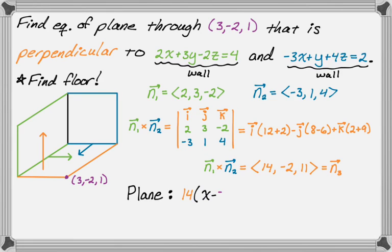So let's start substituting. We have 14 times the quantity x minus 3, minus 2 times the quantity y minus negative 2, and then plus 11 times the quantity z minus 1 equals 0.